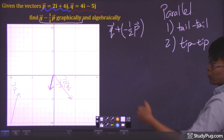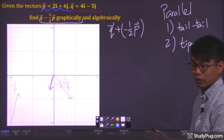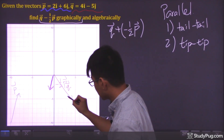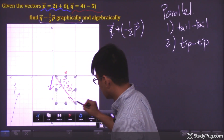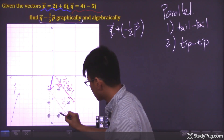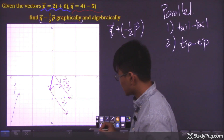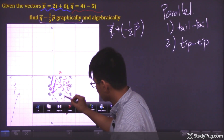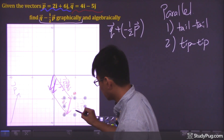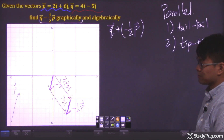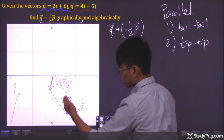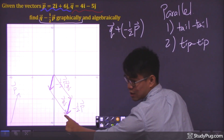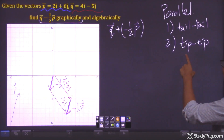For the second step, we need to duplicate the two vectors and shift them across to form a parallelogram. After duplicating and shifting, we have formed a parallelogram, and notice that the tips of the two arrows are connected at one point. The second step is done.